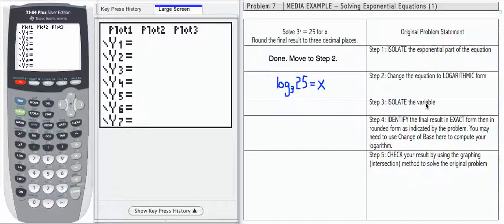Step 3 is to isolate the variable. The variable is x. X is already by itself in this equation. That part is done. We're going to move on then to step 4.